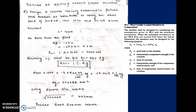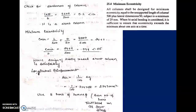Our column size is fixed at 500×500 mm with 1% steel. We now check whether it is a short or slender column: effective length / least lateral dimension = 2600 / 500 = 5.2, which is less than 12. So it is a short column. Next, we check for minimum eccentricity: emin = L/500 + D/30 = 24.67 mm. The ratio emin/D is less than 0.05, so we design it as an axially loaded short column and do not consider additional moment.